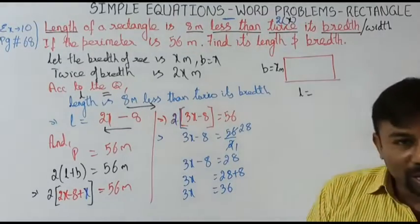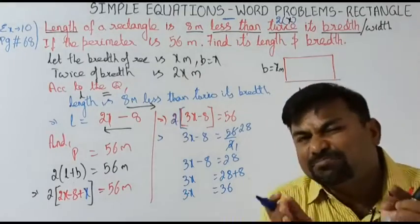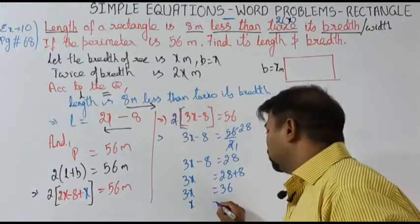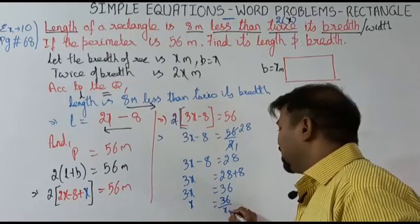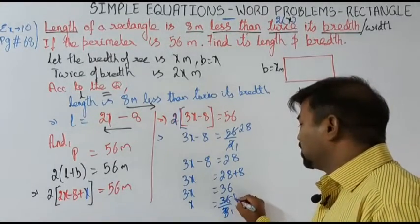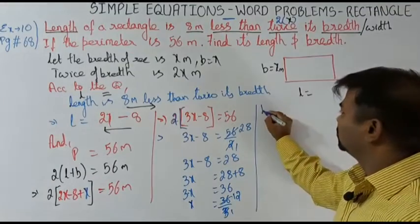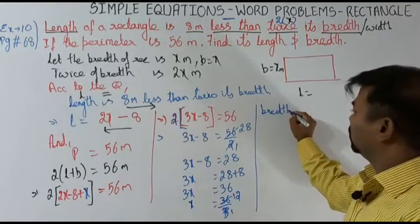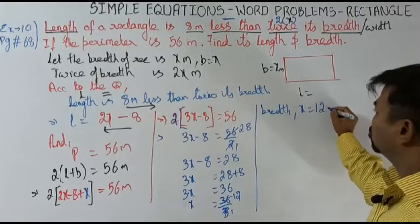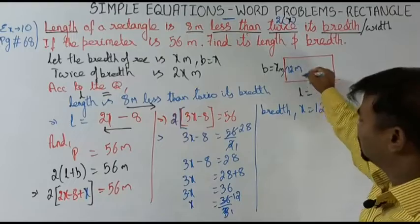Sending minus 8 to the other side: 3x equals 28 plus 8, so 3x equals 36. Now 3 is multiplying, so send it to the other side: x equals 36 by 3, which is 12. So breadth x equals 12 meters.